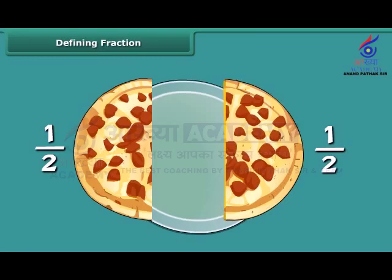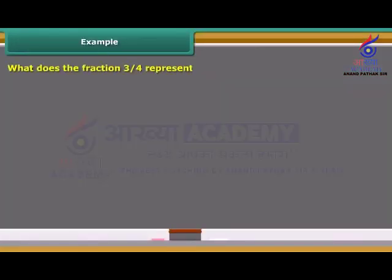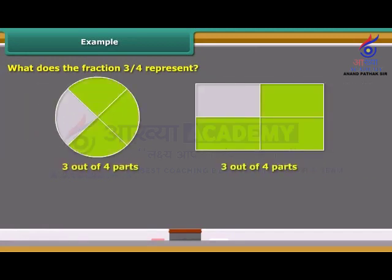For example, Ravi divides a pizza into two parts. What does the fraction 3 upon 4 represent? It represents three out of four parts. The shaded part of each figure below represents 3 upon 4 of the entire figure.